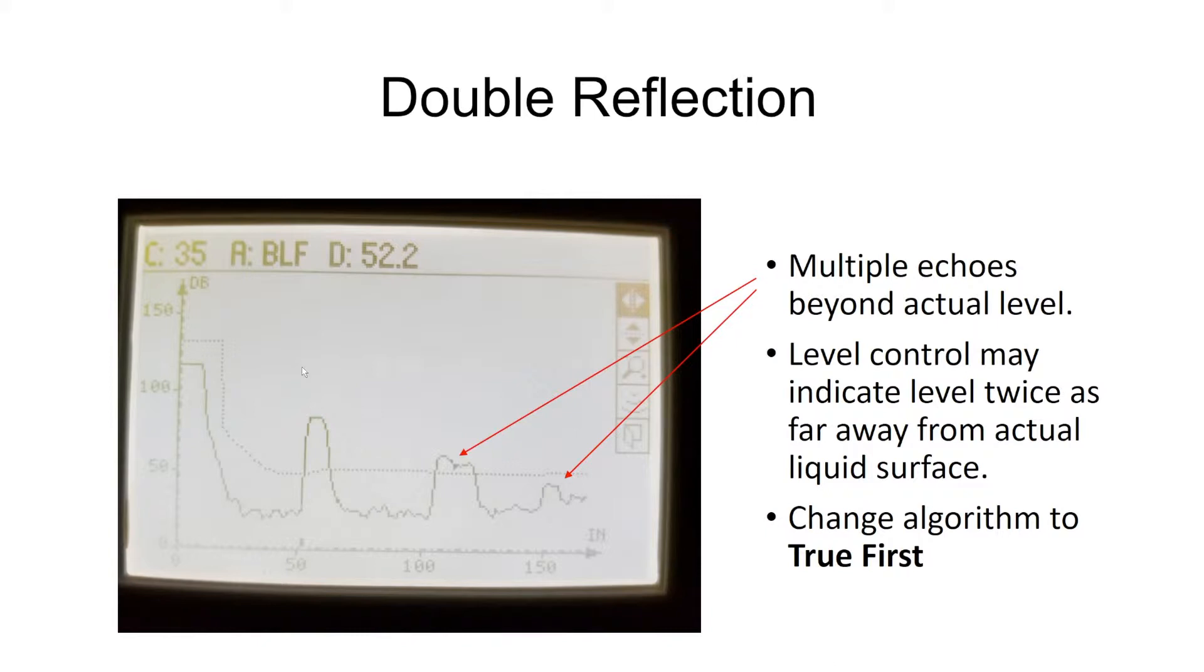Taking a look at this application, we have a very strong first echo. Then we have a second echo, which is not quite as strong, and a third echo. Looking at this, you can tell that the second and third echo are exactly two and three times the distance from the first echo. So, what do we do to get rid of this? The easiest thing we can do, and it works out most of the time, is changing the algorithm in the program from best of largest and first to a true first. What the level control will do in this case is choose the first echo that it sees above that TVT line and pick that as our level and ignore the second and third echoes.